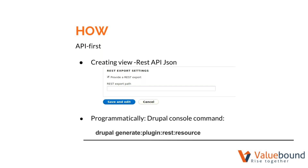Instead of outputting HTML, Drupal 8 outputs the data. There are two ways to achieve this. One is by creating a REST API using views. Another is programmatically — in Drupal 8, they have a Drupal console command which generates the basic structure so the developer can implement the logic to fetch the data.